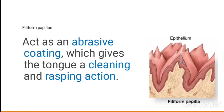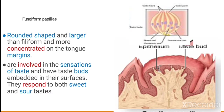Filiform papillae act as an abrasive coating which gives the tongue a cleaning or rasping action. Fungiform papillae are rounded in shape and larger than filiform. They are more concentrated on the margin of the tongue and are involved in the sensation of taste, with taste buds embedded in their surfaces.